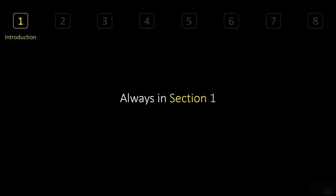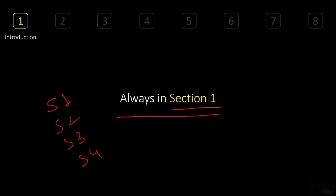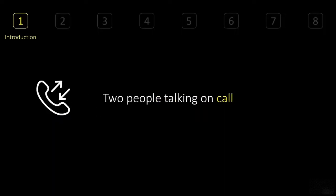Form completion is always in Section 1. If you don't know what Section 1 is, I suggest you watch the video about listening sections. There are four sections total — Section 1 through 4 — and difficulty always increases from Section 1 to Section 4. Because form completion always comes in Section 1, it is the easiest question type, though there are some tricks to understand.